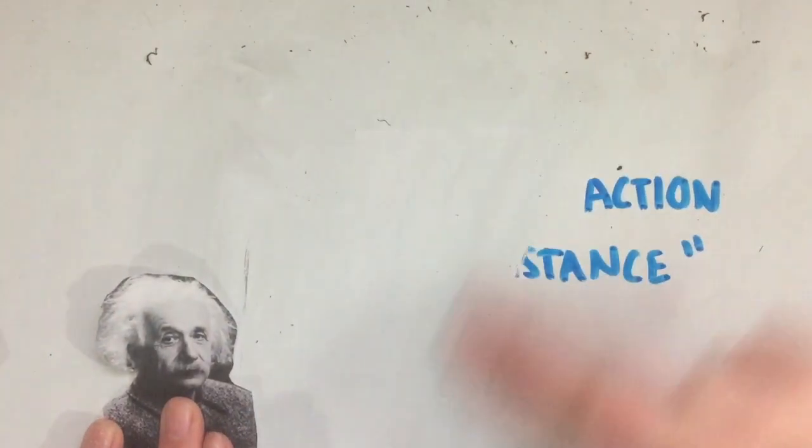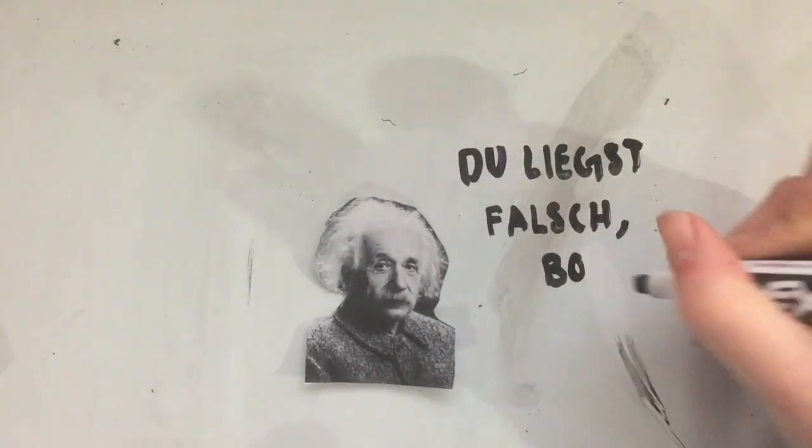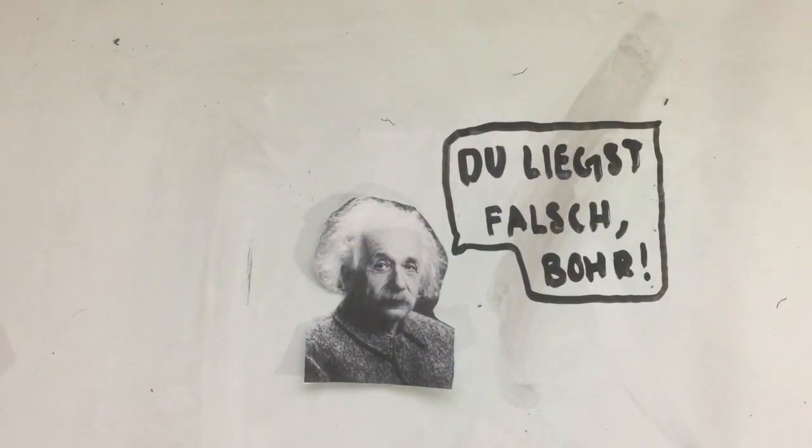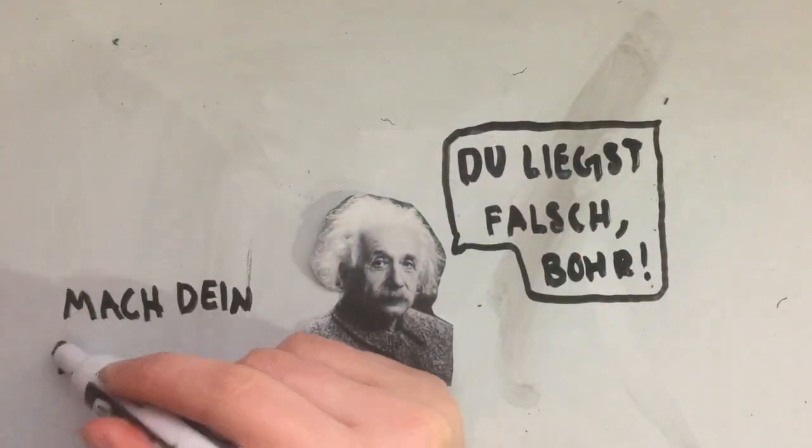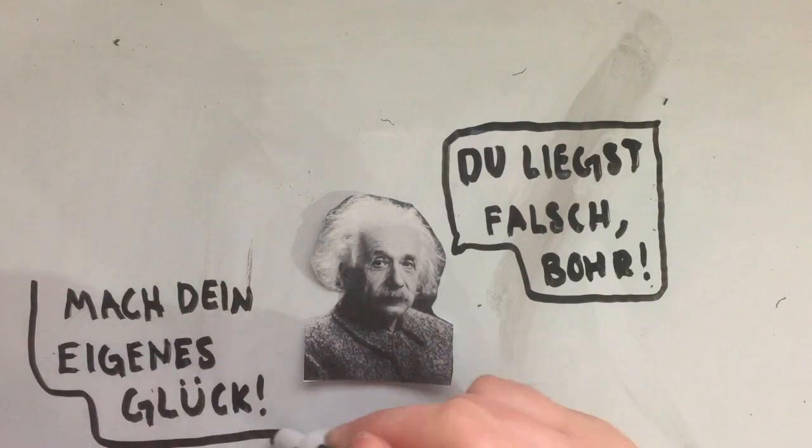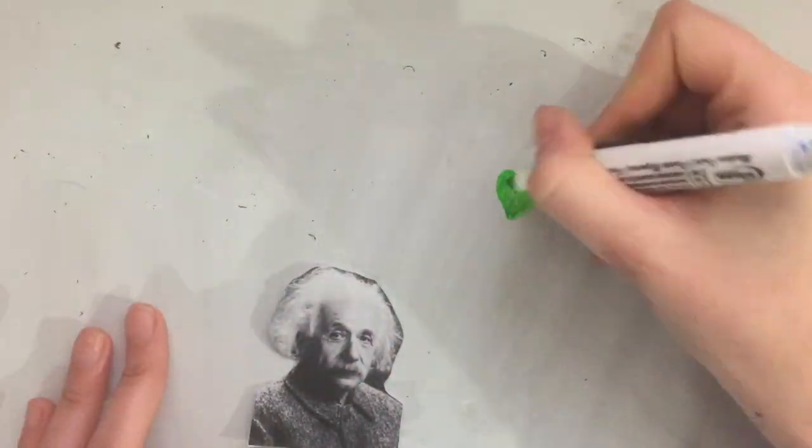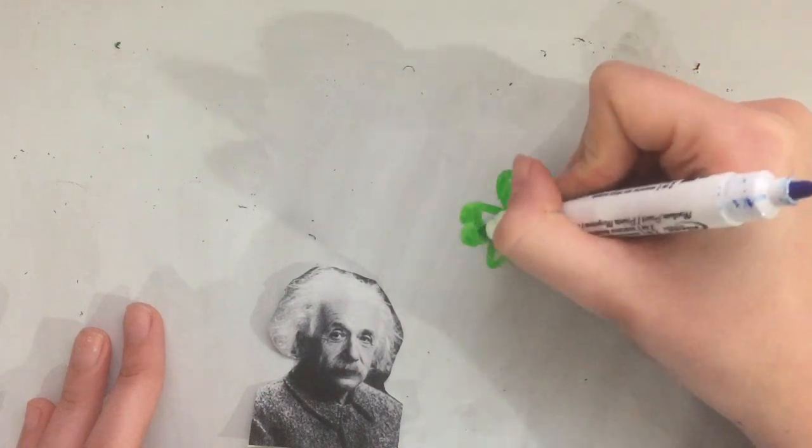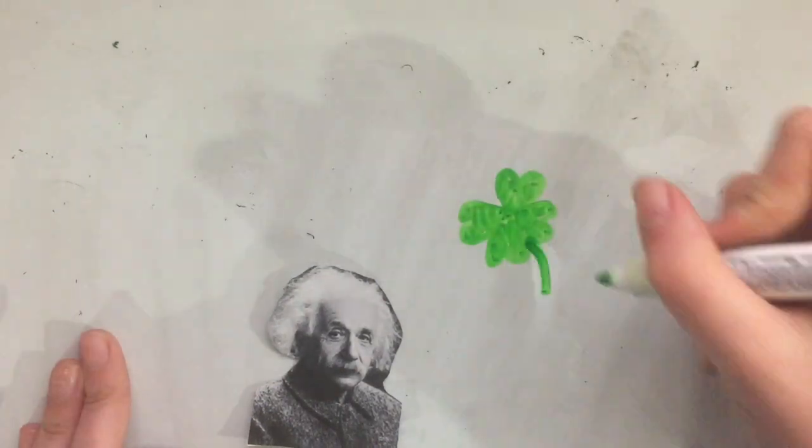Einstein was one to live his life as a local realist, meaning he didn't believe that particles could possibly affect each other from across vast distances, and that an object has definite value even if it isn't measured. He was not one to believe in probability or luck either, instead believing that everything was, in a way, predestined, even choosing not to believe in free will.